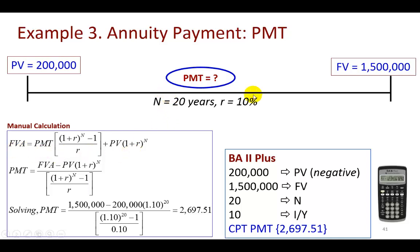So this $1.5 million can be viewed as the future value of an annuity, which in addition to the future value of this $200,000, which is a present value. So I defined it here, solve for payments, substitute and it's going to be $2,697.51.